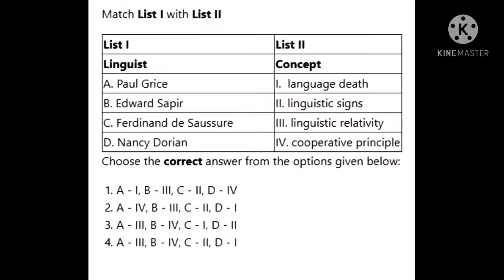The very first question is a match list one with list two. Please check the options and try to match. The right answer is option number two. Paul Grice has given the term cooperative principles, Edward Sapir has given the term linguistic relativity, Ferdinand de Saussure gave the term linguistic science, and Nancy Dorian has written a book on language death. So the right answer is option number two.